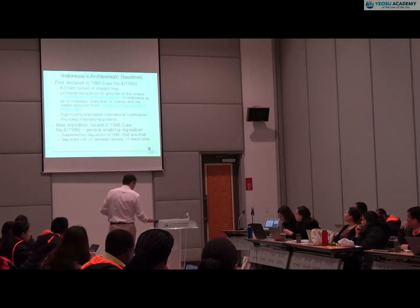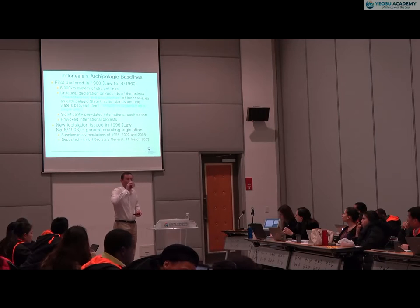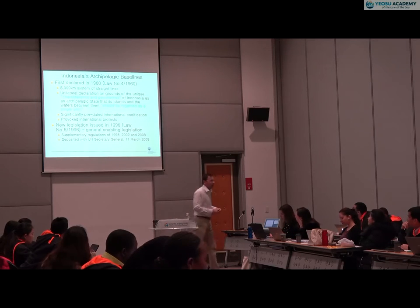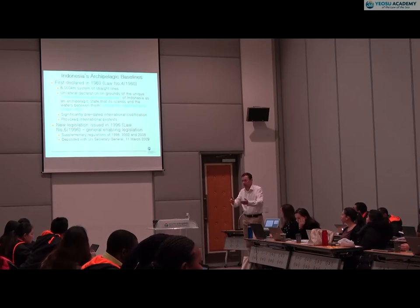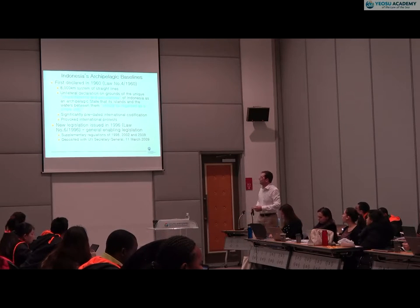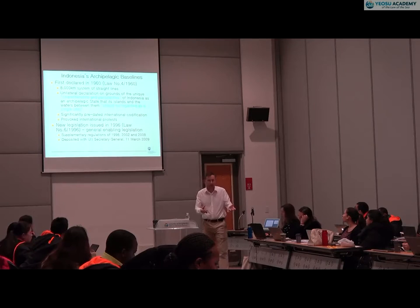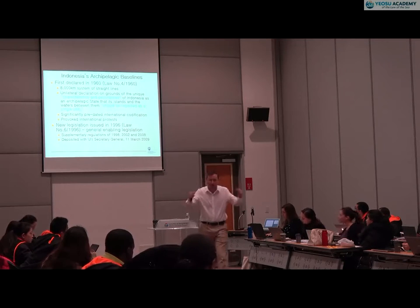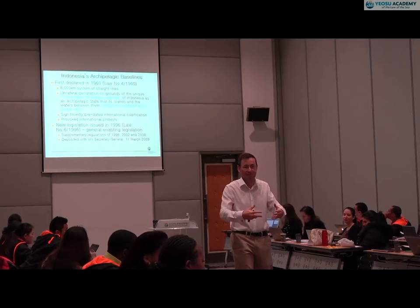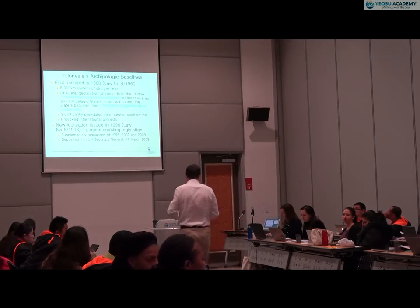Indonesia — the grandfather figure for the archipelagic concept. The 1960 baselines are 8,000 kilometers long and cover the whole Indonesian archipelago. On the basis that the characteristics and peculiarity of Indonesia as an archipelagic state should be regarded as a single unit — this is a political issue for many archipelagic states. Drawing archipelagic baselines around all of the islands is a way of binding them all together as one single political unit.